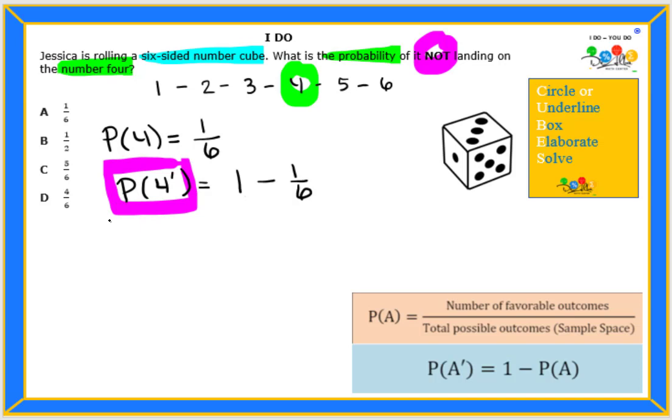Now when I think about the number one as a fraction, it can be any number over the same number. So since we are working with six, I'm going to make one six over six.